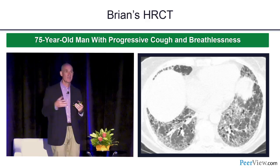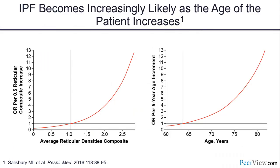Research by Margaret Salisbury looked at age: as patients get older, or have more reticulation without honeycombing, the odds of having UIP under the microscope increase — not linearly, but more exponentially. Is there a cutoff? Maybe 65, 70, or our patient Brian at 75, where the odds are high enough for UIP even without honeycombing that a biopsy isn't needed.